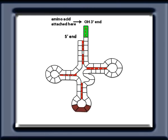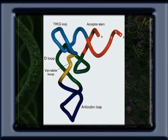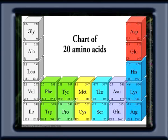Transfer RNAs also have an anticodon loop at their other end with which the tRNA pairs with codons, one DHU loop, a pseudouridine loop, and an extra arm or variable loop of 7 to 10 nucleotides. X-ray diffraction analysis has shown that the transfer RNAs are made up of two double helices arranged in the shape of an L.